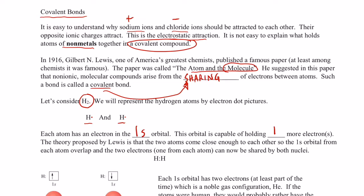The theory proposed by Lewis is that the two atoms come close enough to each other so that the 1s orbital from each atom overlaps, and the two electrons, one electron from each atom, can now be shared by both nuclei. And so we end up with a structure that looks like this, where that pair of electrons is being shared.